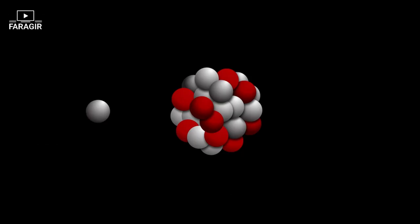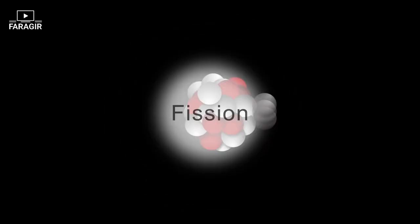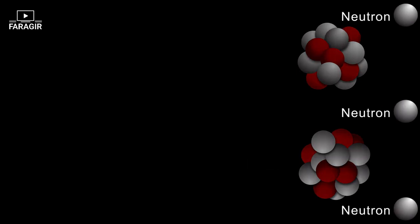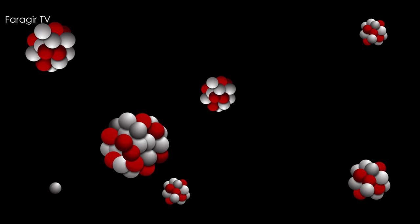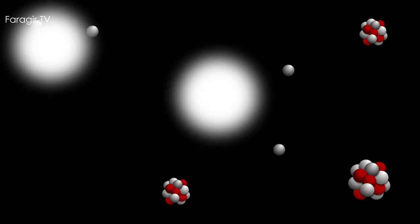Now we return to the main discussion. When we shoot a neutron towards a uranium atom, it causes the uranium atom to split into two parts and release two or more neutrons. Energy is also released. The new neutrons that are released then collide with new uranium atoms and cause them to go through the same process — this is continuously repeated and a chain reaction occurs.